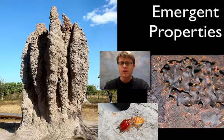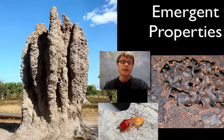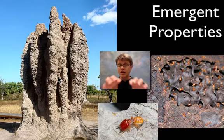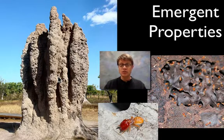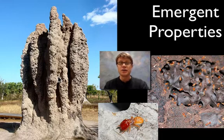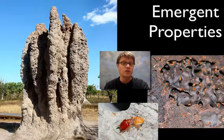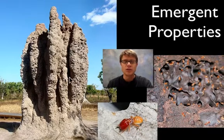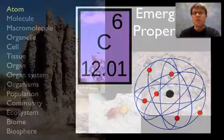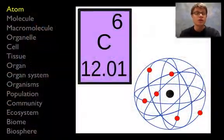Now you might think, wow, smart termite — how did they figure that out? Well, basically think of it as 80 different termite cathedrals that are a little bit smaller. In some of those, all the termites die and their genes die with them. Those that have any kind of ventilation are going to be able to survive. And so we get an emergent property showing up.